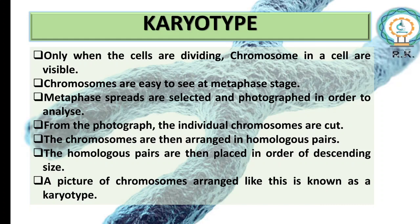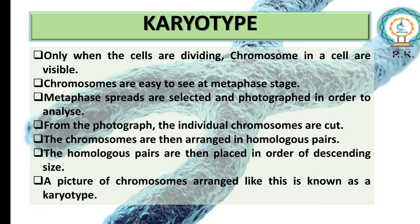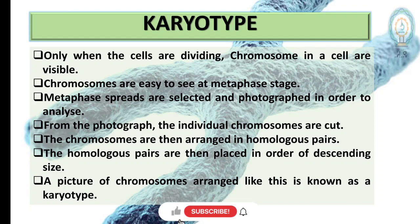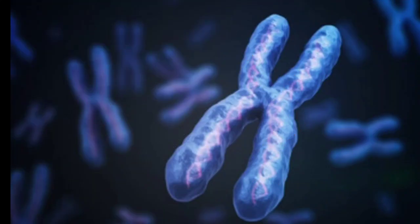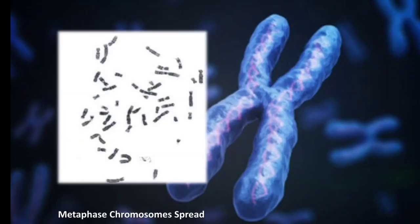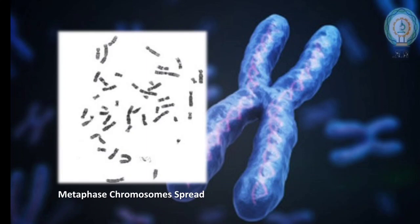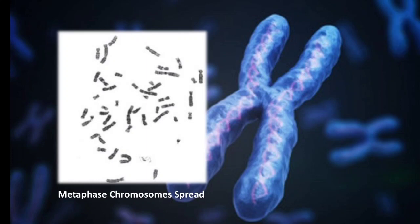A picture of chromosomes arranged in such a pattern is known as a karyotype. On this side you can see a metaphase chromosome spread — a suitable spread taken for study — which is photographed and arranged properly as a karyotype.